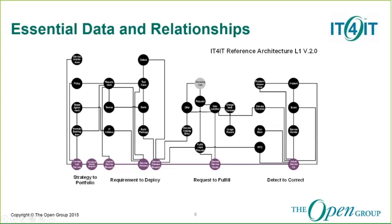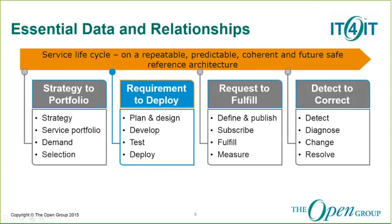This is known as the system of record fabric of the architecture. By stripping away the functional components, we can see the end-to-end nature of the data and the relationships. This architecture allows us to tie the key data together, enabling IT leadership with the information they need to run the business of IT.